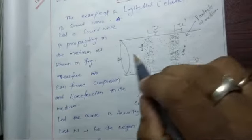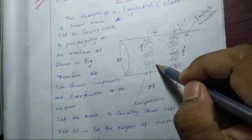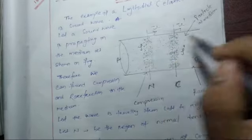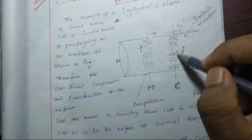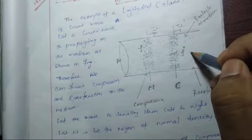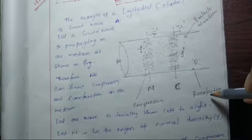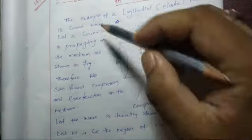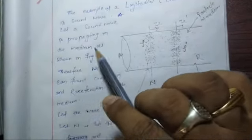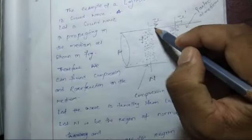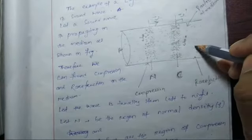Whenever a sound wave moves from left to right, the normal density throughout the cylinder is changed. At a particular point we can get a large number of molecules (high density) and beside it we get fewer molecules — called rarefaction. The example of a longitudinal or elastic wave is a sound wave. Let a sound wave propagate in the medium from left to right as shown in the figure. We can find compression and rarefaction in the medium.